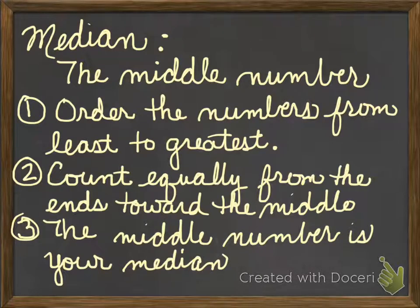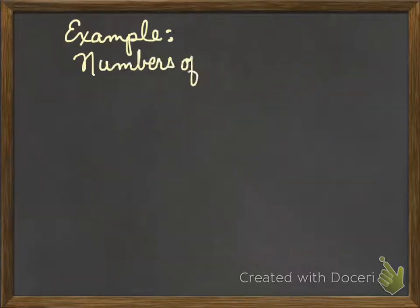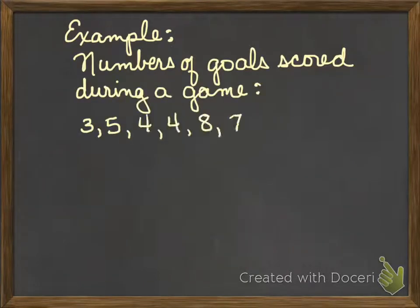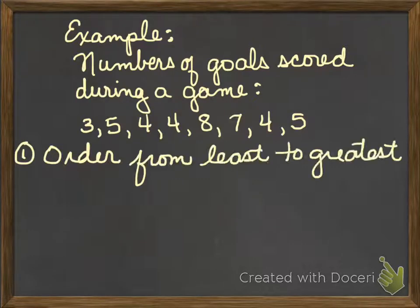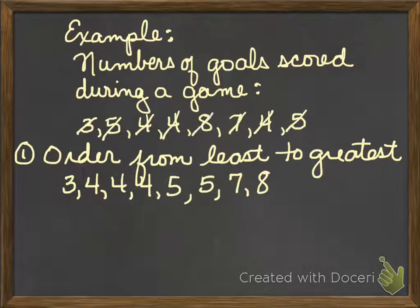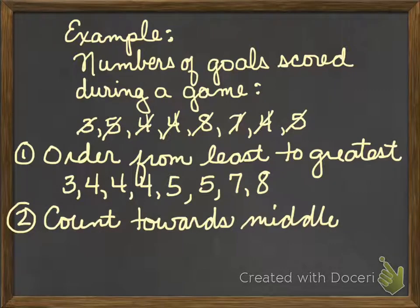So let's take a look at an example of how we do that. Again, we're going to use our number of goals scored in a game. The first thing I'm going to do is put those numbers in order from least to greatest. I like to cross out as I list them, so that I make sure I get them all. Now that I've got them from least to greatest, I'm going to count towards the middle and cross out those numbers so I can find the ones in the middle.